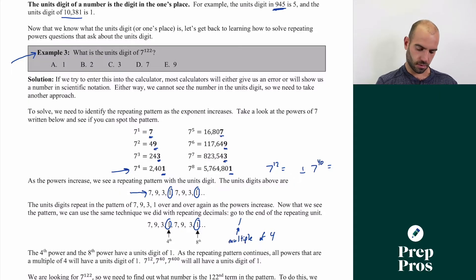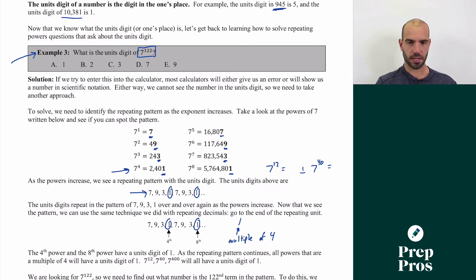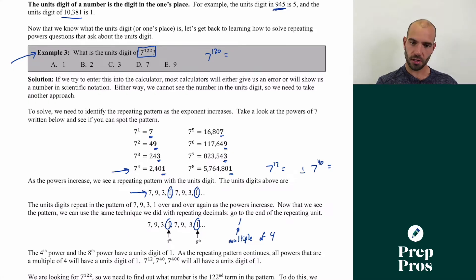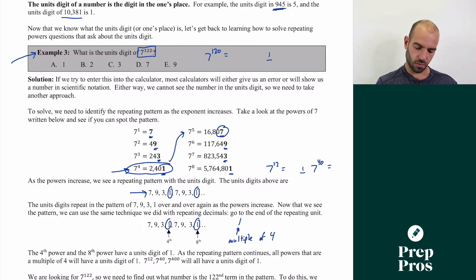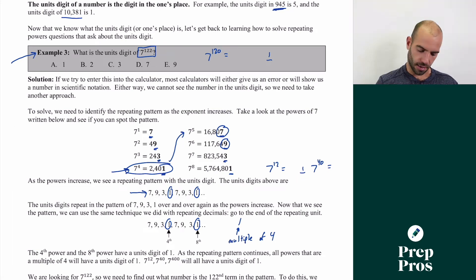We do the same thing as before: find a multiple of four near 122. You can take your calculator and do 122 divided by 4 — it doesn't give a whole number, but 120 is a multiple of four. So seven to the 120th ends in a 1. We can then keep the pattern going: seven to the 121st ends in a 7, and seven to the 122nd ends in a 9. Counting two steps forward in our 7, 9, 3, 1 pattern, the correct answer is E — it ends in a 9.